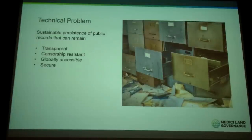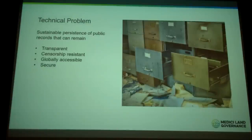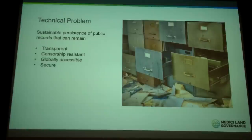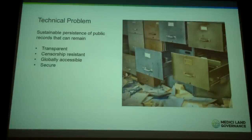Censorship resistant means you've built a system that has something in place that makes it extremely hard to change a record. Globally accessible means if we're going to have a truly public place for these records, they have to be accessible across borders — we can't have any notion of controlled access to the data. Because if we take away global accessibility, we lose transparency and also lose the benefits of information being shared to people outside their locales.